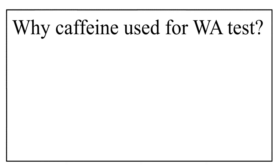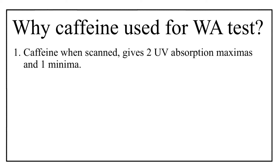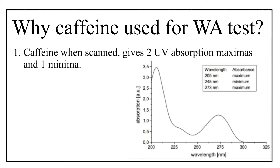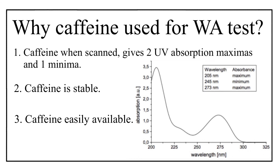There are three main reasons why caffeine is used for the wavelength accuracy test. Number one, caffeine solution when analyzed under UV gives two absorption maximas and one absorption minima, so its UV spectrum covers almost the entire UV range. Number two, caffeine is very stable. Number three, caffeine is easily available in the market. These are the three reasons caffeine is used for the wavelength accuracy test.